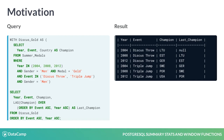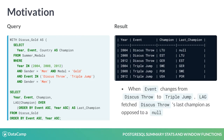However, when using LAG, the first triple jump's last champion is Germany — discus throw's most recent champion — when in fact it should be null, since the two events are different and their champions are not related.